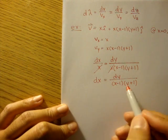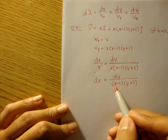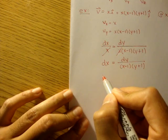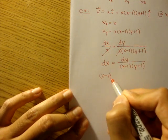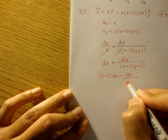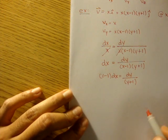We can multiply both sides by x minus 1 to move this x minus 1 over here. So we'll get x minus 1 dx is equal to dy over y plus 1.